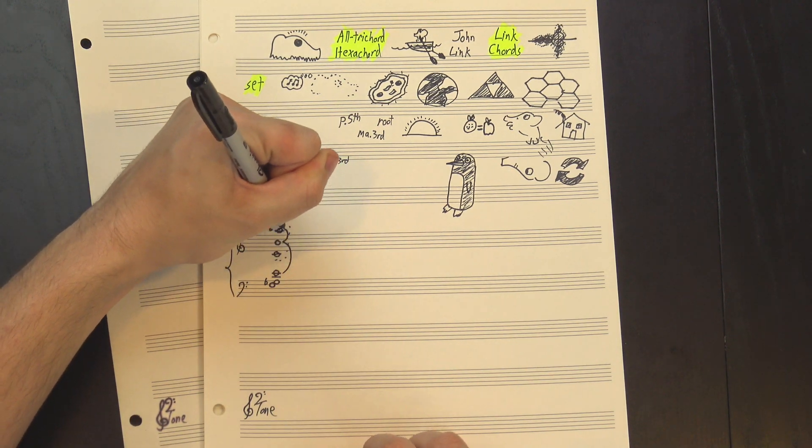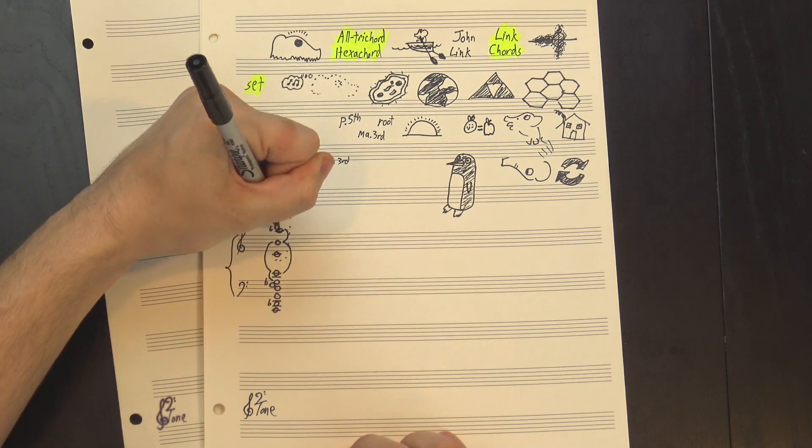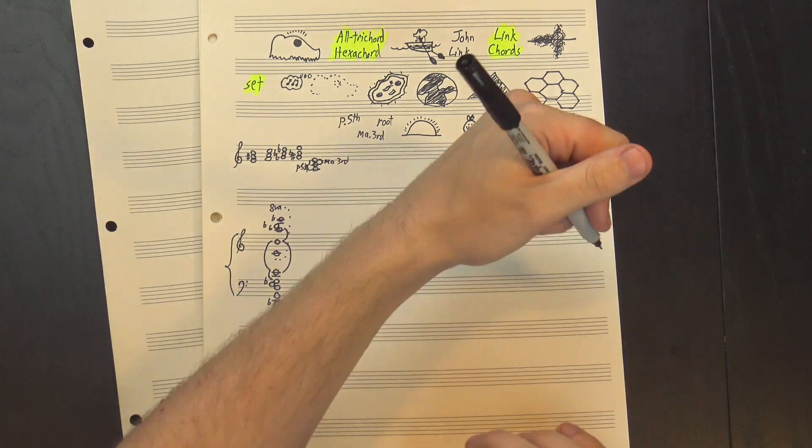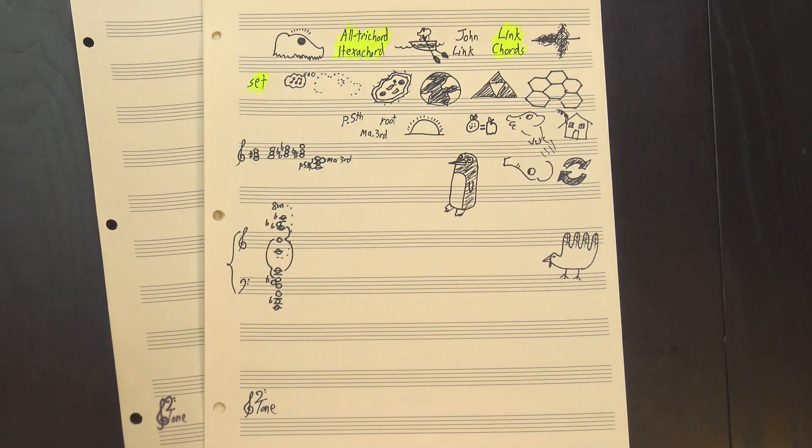We can find the major triad here, the sus4 chord here, and so on. We can then take this hexachord and bury it within an all-interval row like this one, to create a link chord, which is kind of like the musical math equivalent of a turducken. I guess.